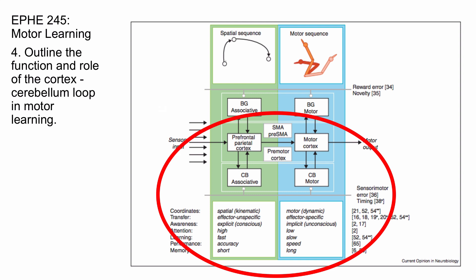So that's what distinguishes the two loops: the type of error that's being evaluated. The basal ganglia evaluates reward errors and novelty errors. The cerebellar loop and the cerebellum evaluate sensorimotor errors and timing errors.